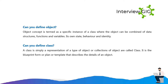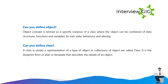Can you define object? Object concept is termed as a specific instance of a class where the object can be combined of data structures, functions and variables, its own state, behavior and identity. Can you define class? A class is simply a representation of a type of object, or collections of objects are called a class. It is the blueprint, form, or plan or template that describes the details of an object.